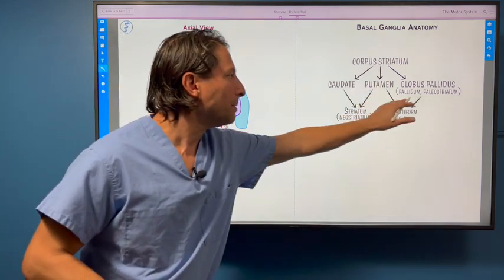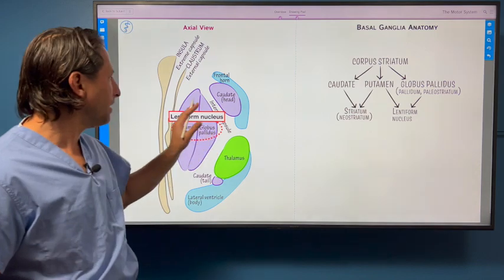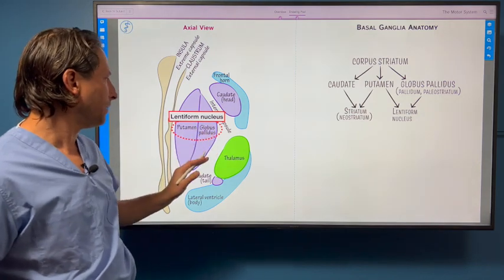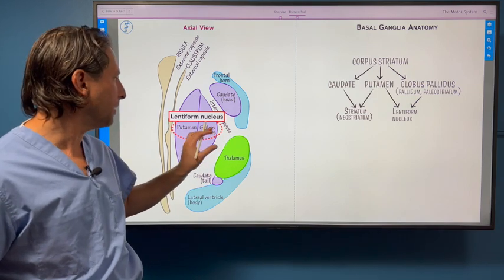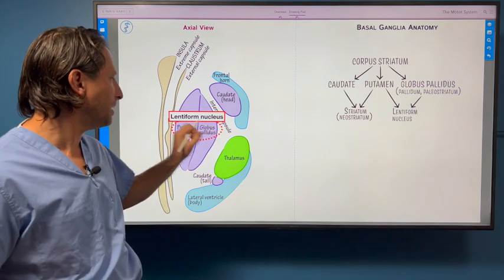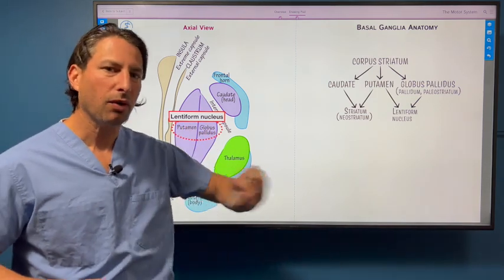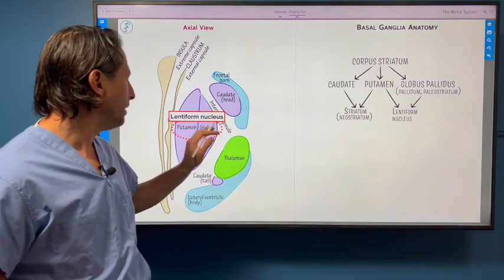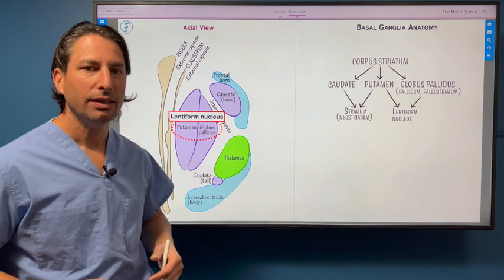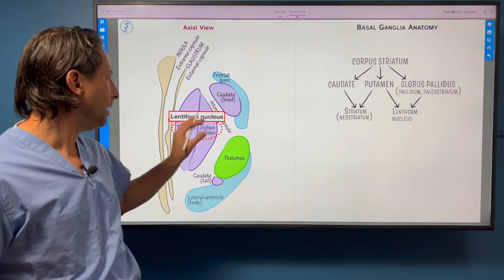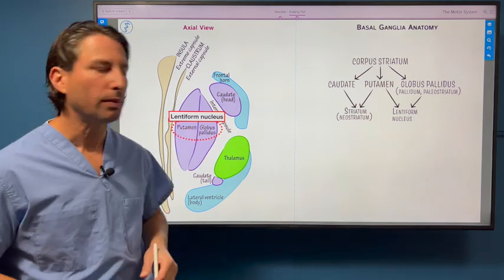The putamen and globus pallidus together are called the lentiform nucleus. There's a neat way in embryology in which the globus pallidus sort of develops into the putamen. You can think of a marble being thrown into mud as the pallidus in the putamen. And then hepatolenticular degeneration refers to degeneration in this lentiform nucleus.